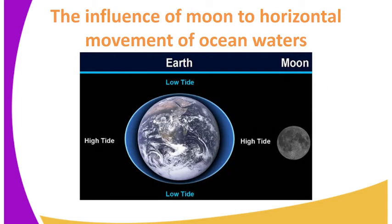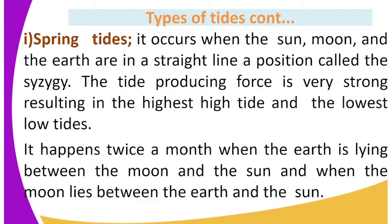We can have a look at the influence of the moon on the horizontal movement of ocean waters. Types of tides. The first one is spring tides. It occurs when the sun, moon, and the earth are in a straight line, a position known as syzygy. The tide-producing force is very strong, resulting in the highest high tides and the lowest low tides.